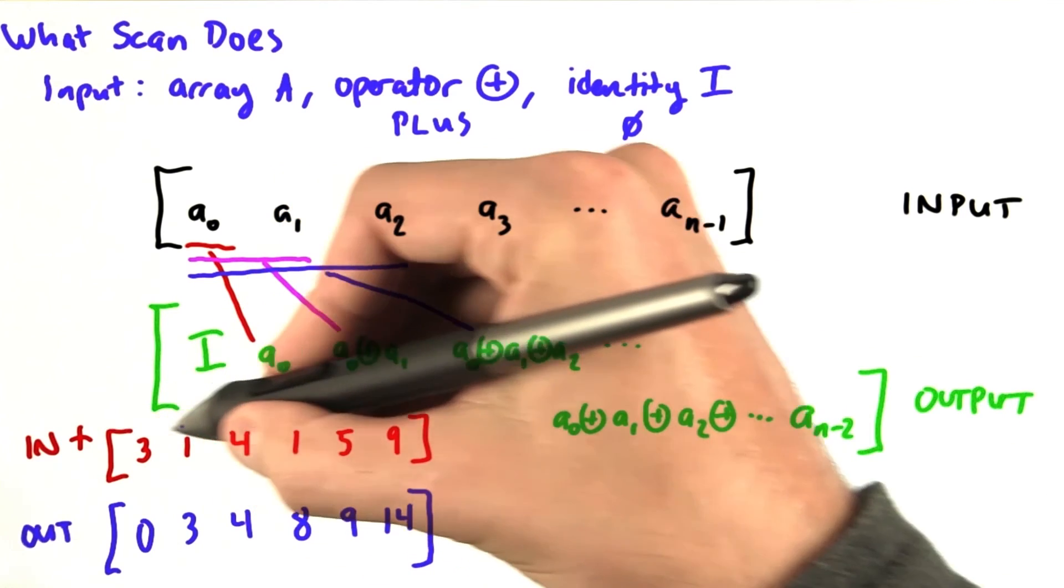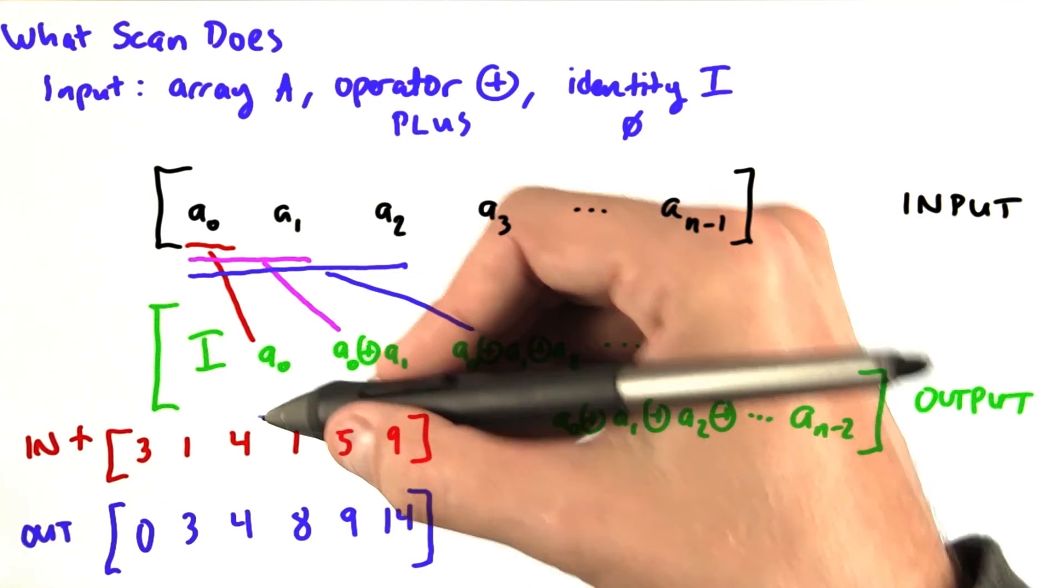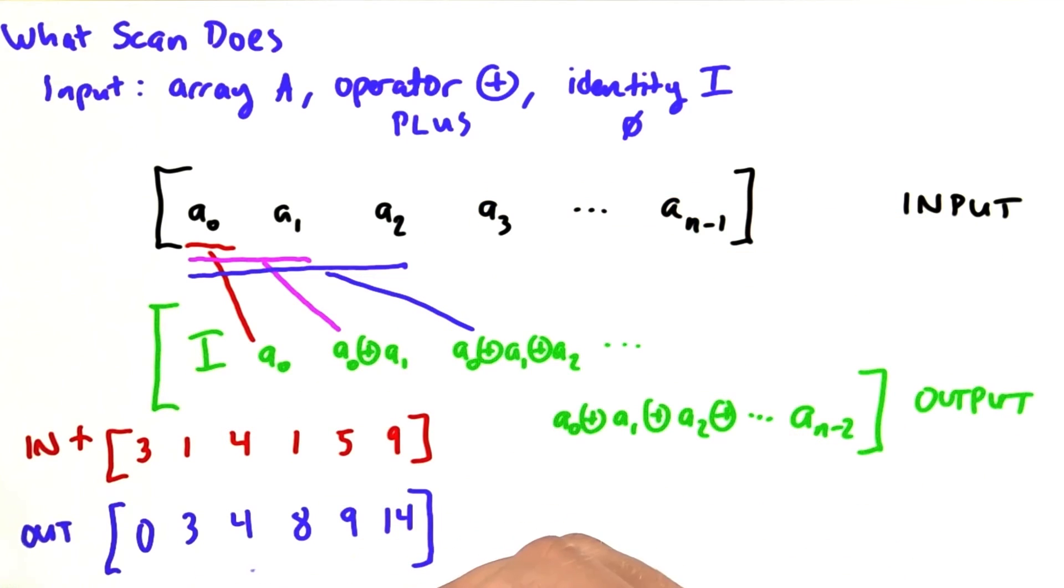So if our input here to scan, to a sum scan, is 3, 1, 4, 1, 5, 9, the output is 0, 3, 4, 8, 9, and 14.